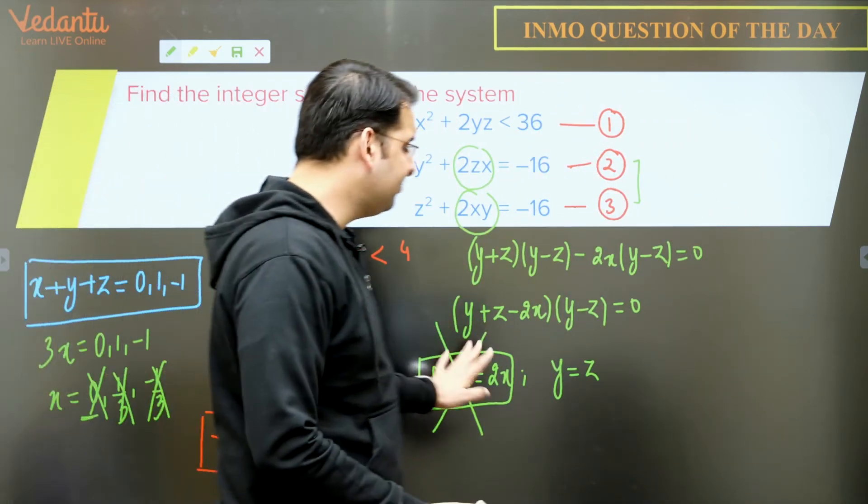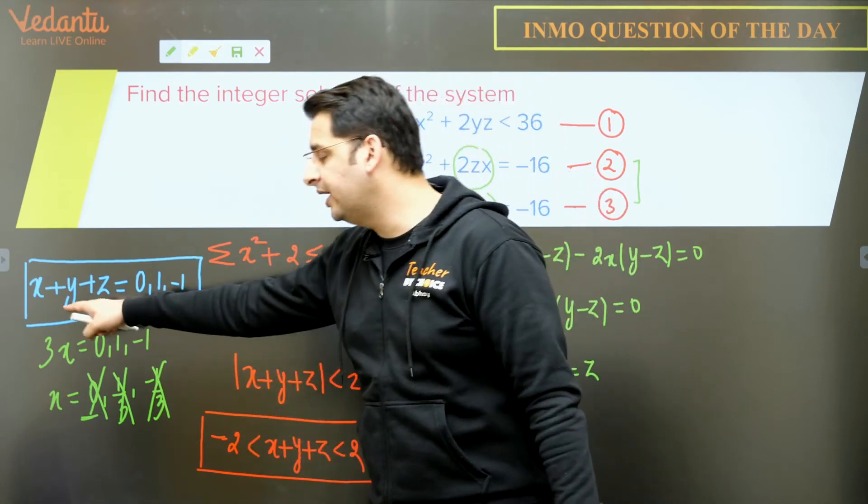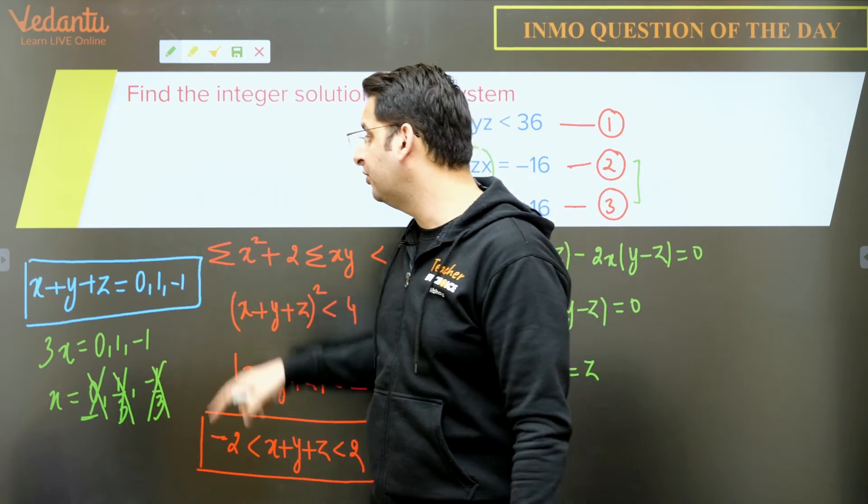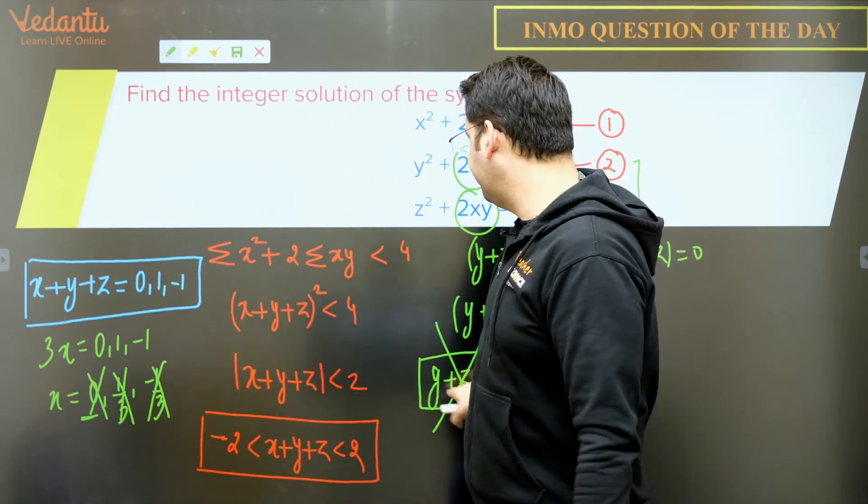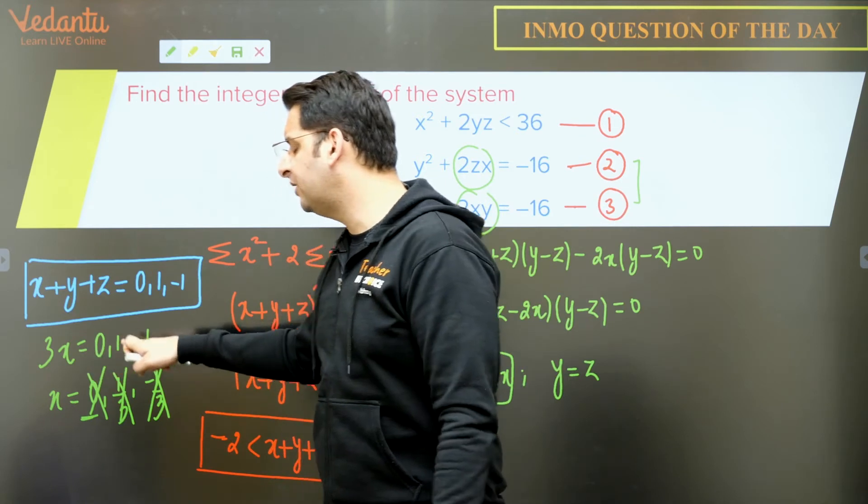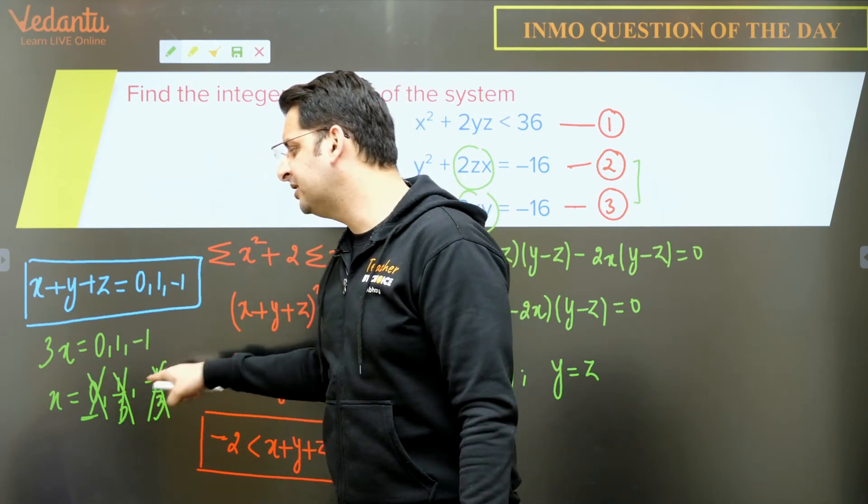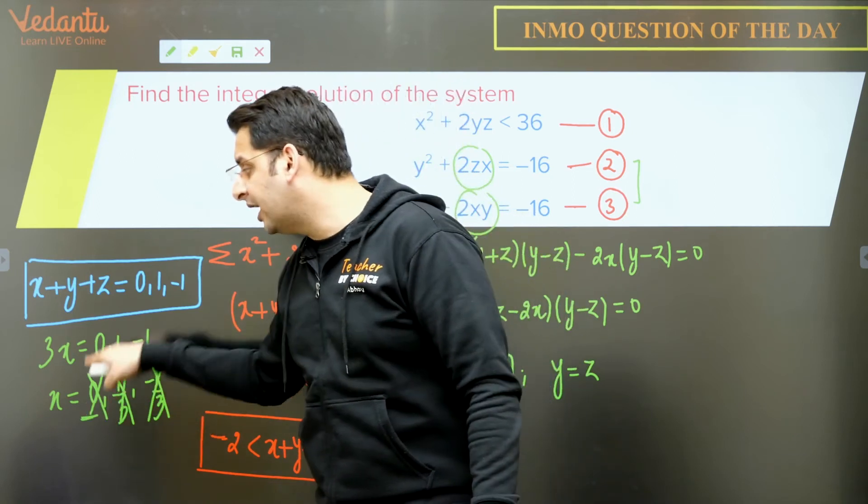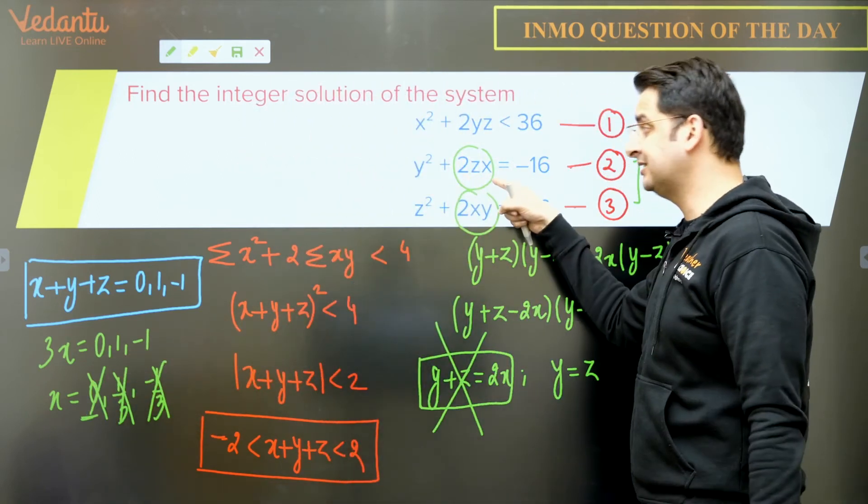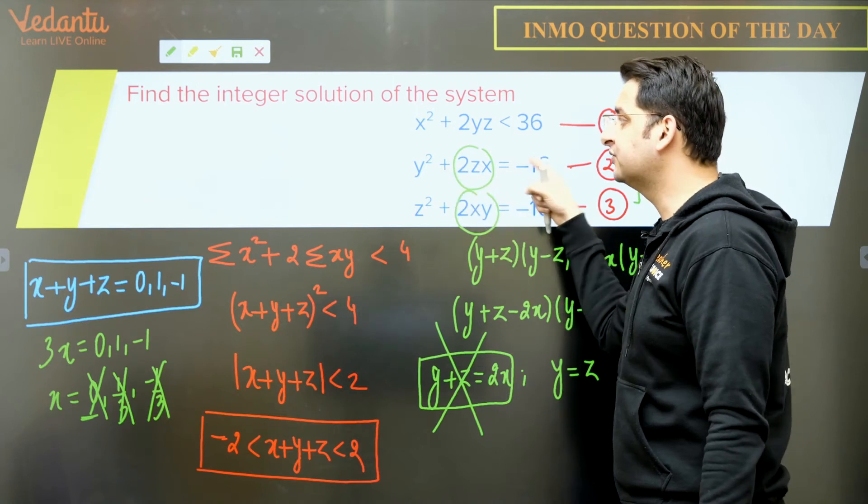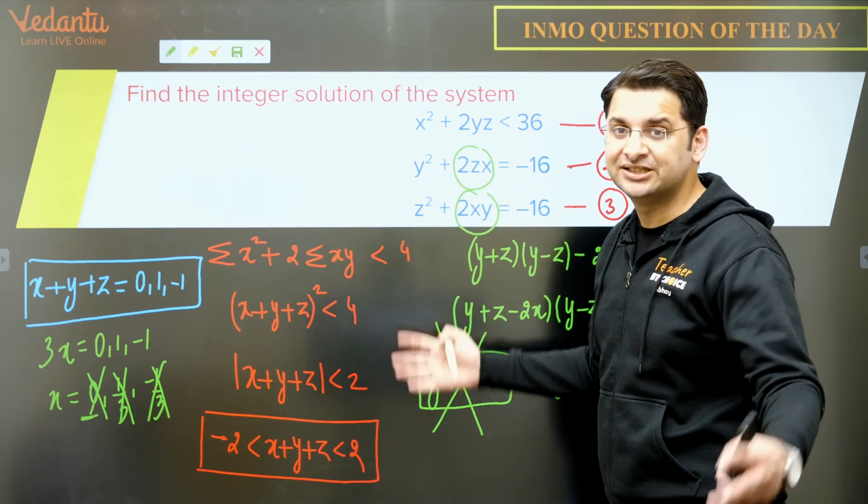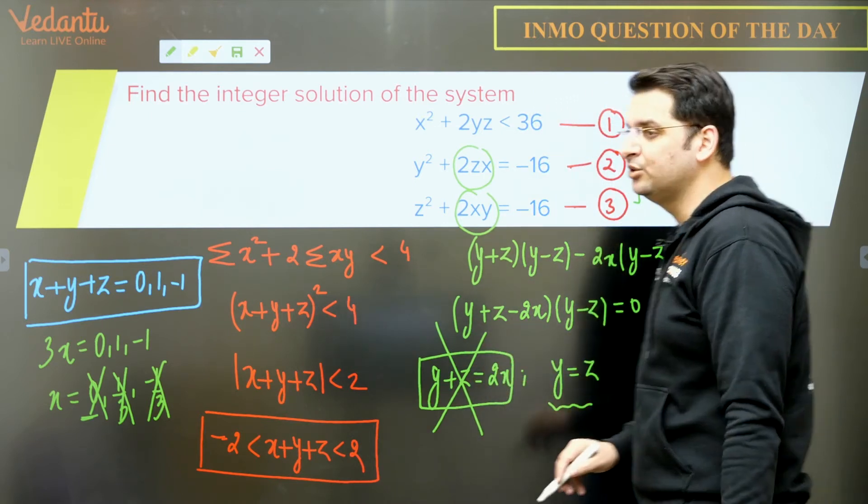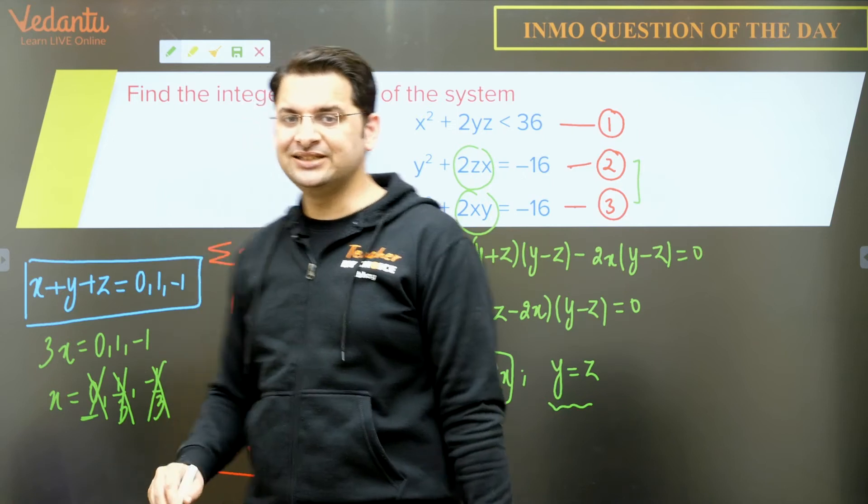I hope you got this, right? So y + z = 2x and if we put y + z = 2x over here, because there are three possible values: 0, 1, or -1. So y + z = 2x means 3x would either be 0, 1 or -1. x will be 0, 1/3, -1/3. Since x is an integer, x cannot be 1/3 and -1/3. x can only be 0. And if x is 0, if I put back x in the second or the third equation, I get y² as negative, which is clearly not possible. So clearly this does not hold true. That means y = z.